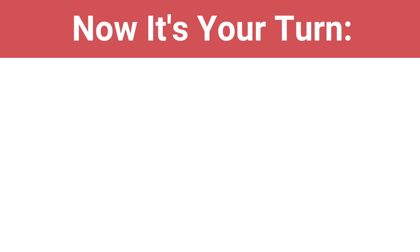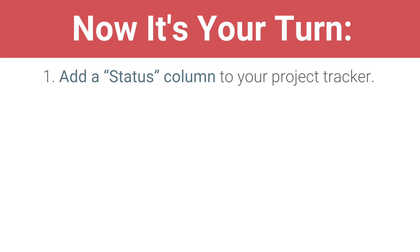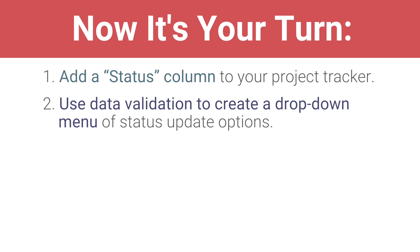In the next video, you will use Conditional Formatting to change the color of cells and text in your spreadsheet to show the status of each task at a glance. Now, it's your turn. Add a Status column to your project tracker and use Data Validation to create a drop-down menu of Status Update Options.